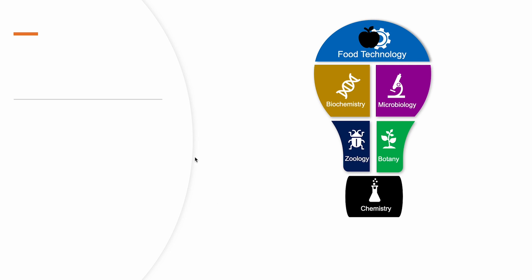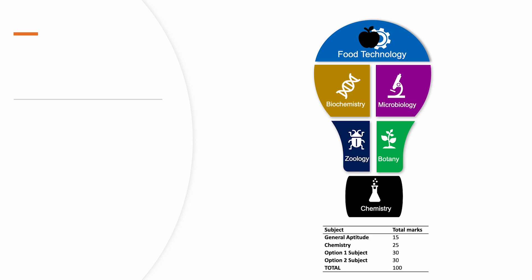First, let's talk about an overview of the subjects in Life Sciences. As you can see, we have a description of the division of the different subjects in tabular form. We have different subjects — for example, General Aptitude which has 15 marks, and the Chemistry portion with 25 marks. Basically, General Aptitude and Chemistry are mandatory in Life Sciences.